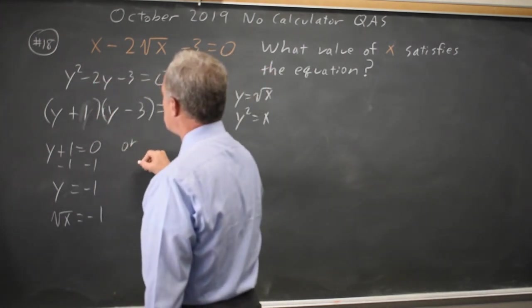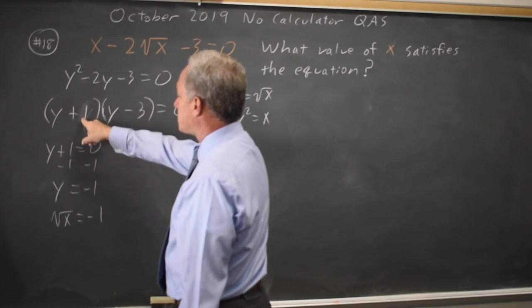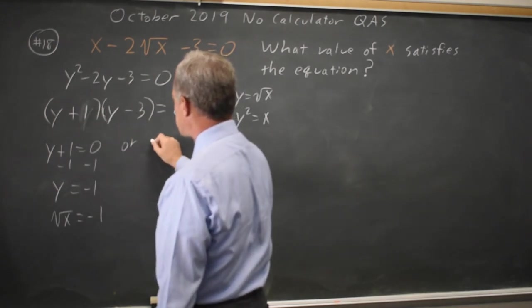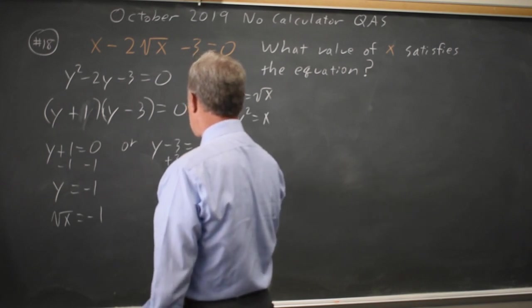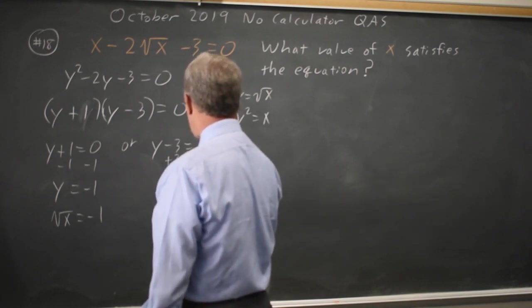Or, if a product equals 0 and the first factor is not 0, the second factor has to be 0. y minus 3 equals 0, add 3 to both sides, y equals 3.